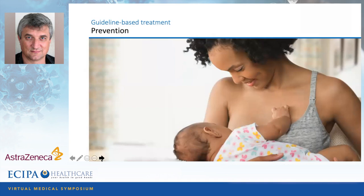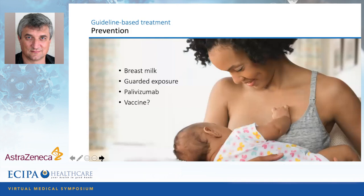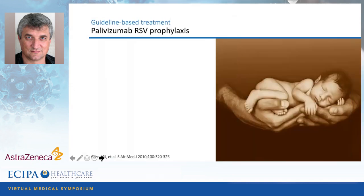Parents always want to know how to prevent RSV virus infection. Breastfeeding is the best way of preventing RSV infection, so we should always encourage exclusive breastfeeding, especially in the RSV season. We should guard against exposure to sick people, especially in high-risk children — remember that grandma and granddad may only present with a runny nose and it could be RSV. I want to say something about palivizumab as an effective prevention method with specific indications. We're still struggling with a vaccine — I believe we are close, but it's been very disappointing so far.